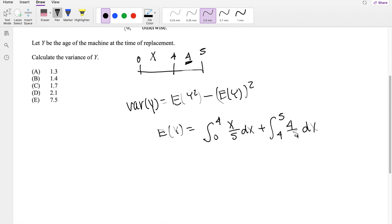So this term right here is going to be 4 over 5. And this one right here is going to be x squared over 10, integrating from 0 to 4, so that's 16 over 10, plus 4/5, which is equal to 12 over 5.